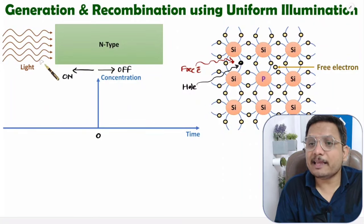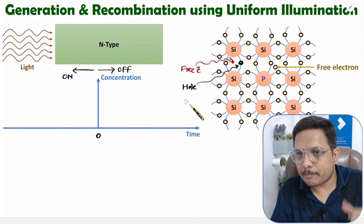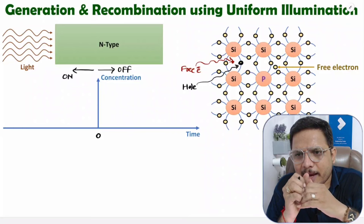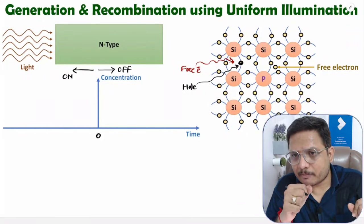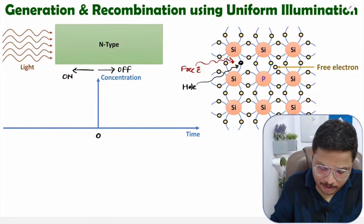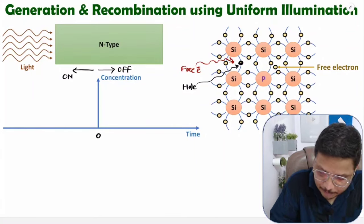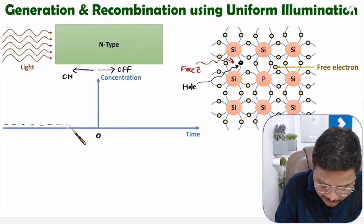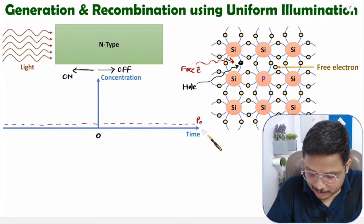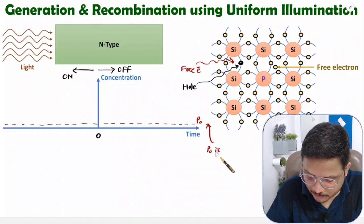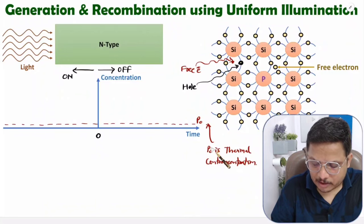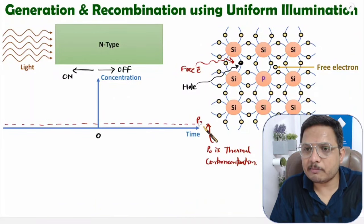Let us consider we have no light. There can still be free electrons and holes due to thermal temperature. At zero Kelvin there are no free electrons and holes, but we usually work at temperatures greater than zero Kelvin, so there is always some finite number of electron-hole pairs due to temperature. Let us call this P0 — the thermal concentration of minority carrier holes that exists due to temperature.